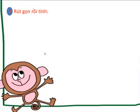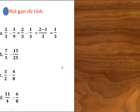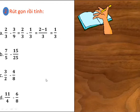Đầu tiên, cô sẽ hướng dẫn ở câu A. Ta xác định trong 2 phân số thì phân số 2 phần 3 đã tối giản, còn phân số 3 phần 9 thì chưa tối giản. Khi đó, ta rút gọn phân số 3 phần 9 thành phân số 1 phần 3 bằng cách chia cả tử và mẫu cho 3. Bây giờ, phép trừ 2 phân số đã thành dạng trừ 2 phân số cùng mẫu, và ta tiếp tục trừ tử số của phân số thứ nhất là 2 cho tử số của phân số thứ 2 là 1 và giữ nguyên mẫu số là 3. Ta được kết quả bằng 1 phần 3. Tương tự câu A, các câu B, C, D các em trình bày vào vở.